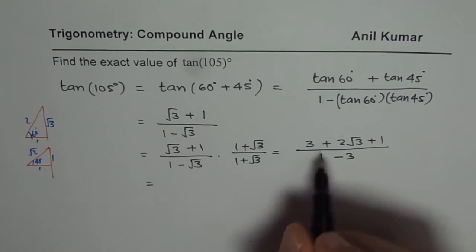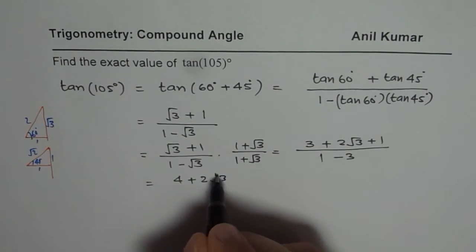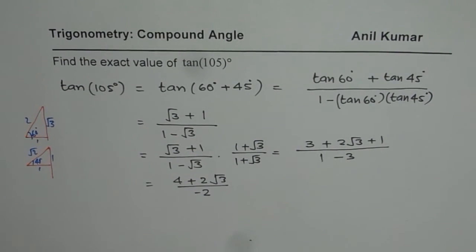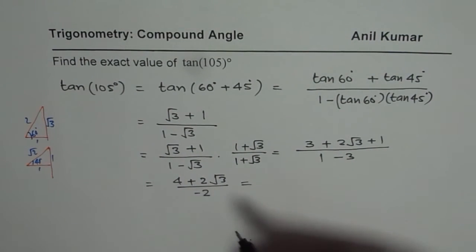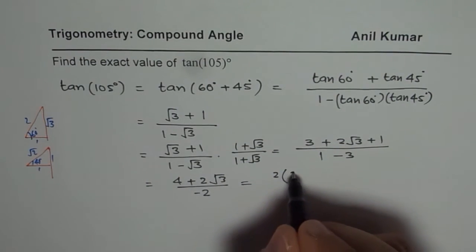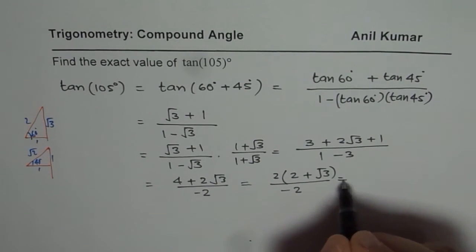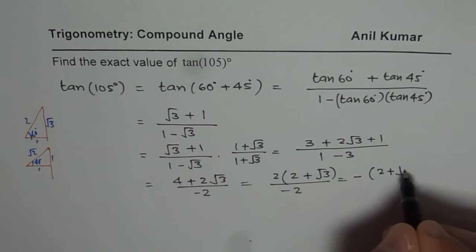Now you can simplify. 3 plus 1 is 4. 4 plus 2 square root 3 divided by minus 2. So divide by minus 2. So you can divide both by 2 now because you can see 2 as a common factor, 2 plus square root 3 divided by minus 2. So that gives you minus 2 plus square root 3.